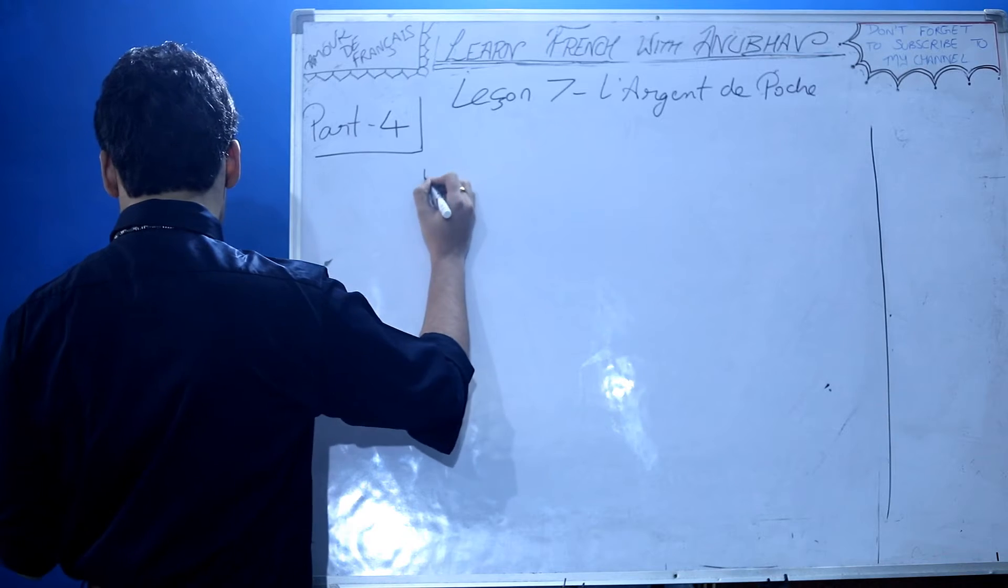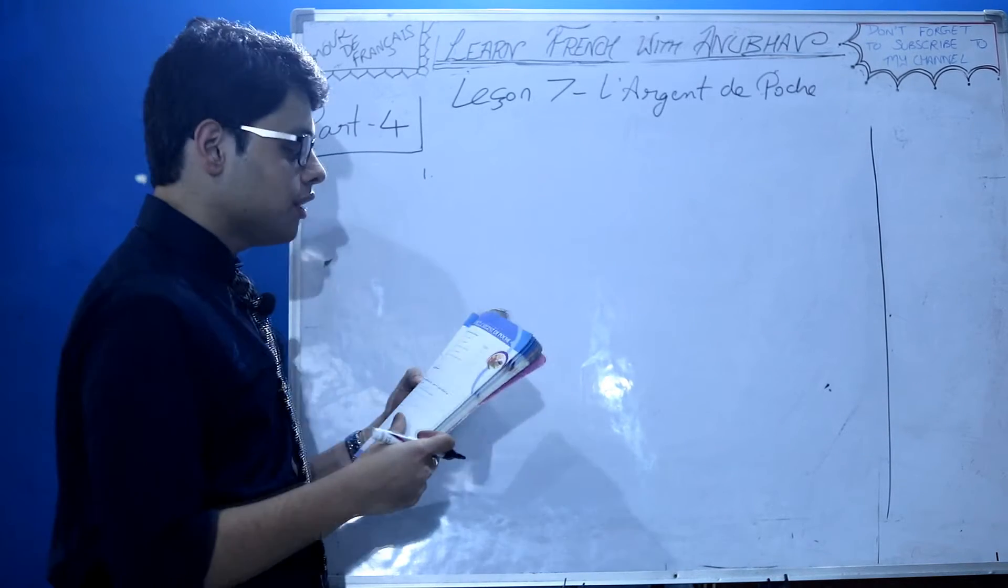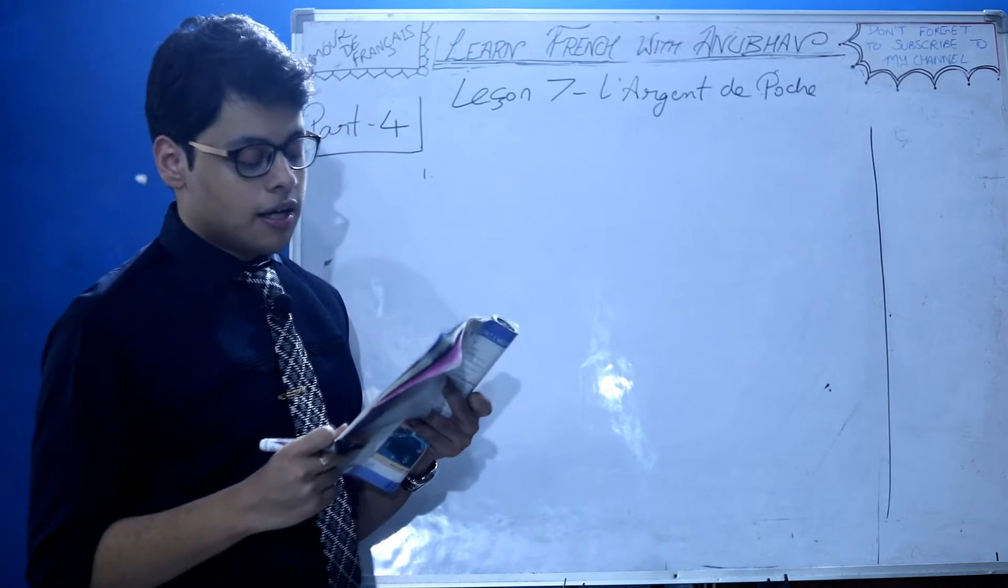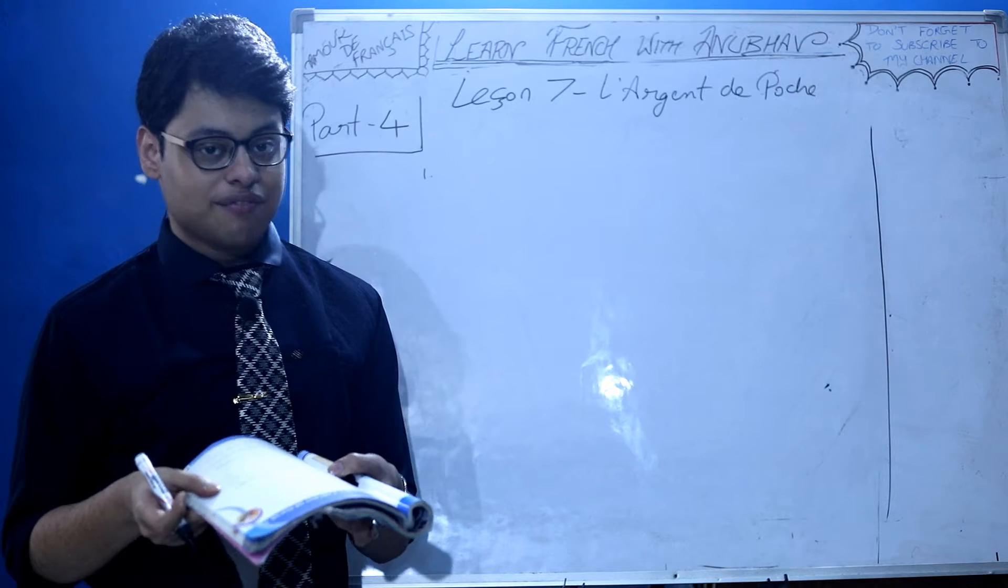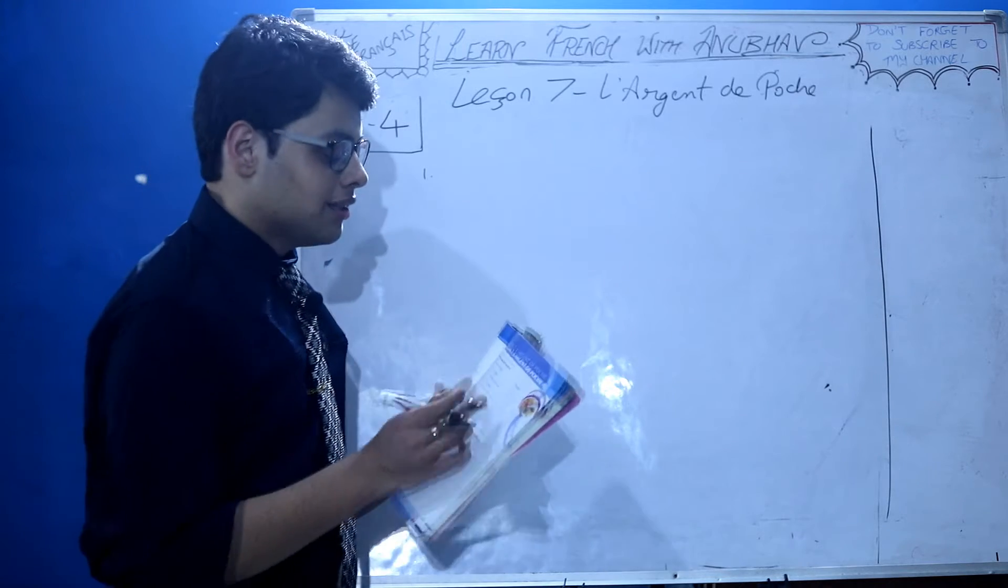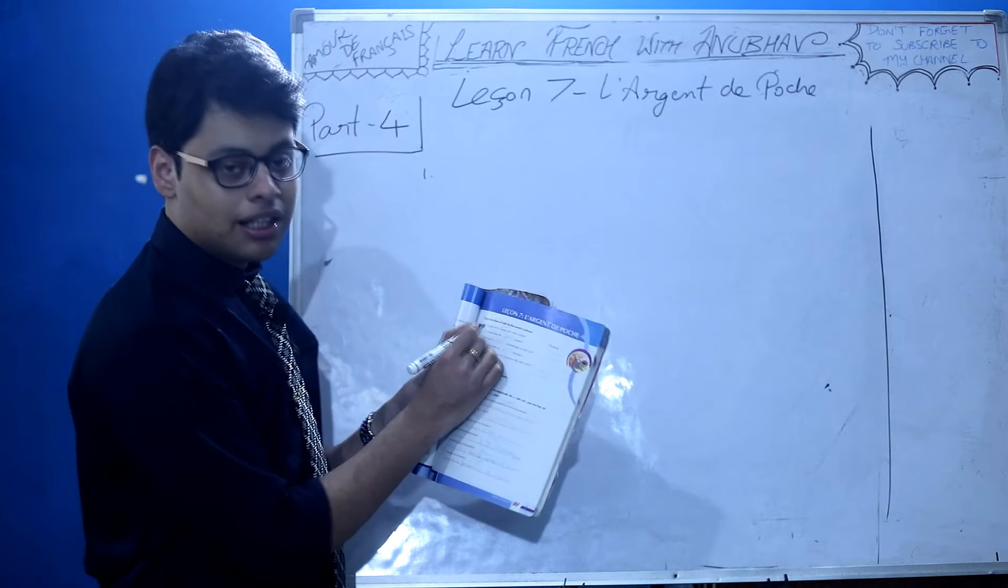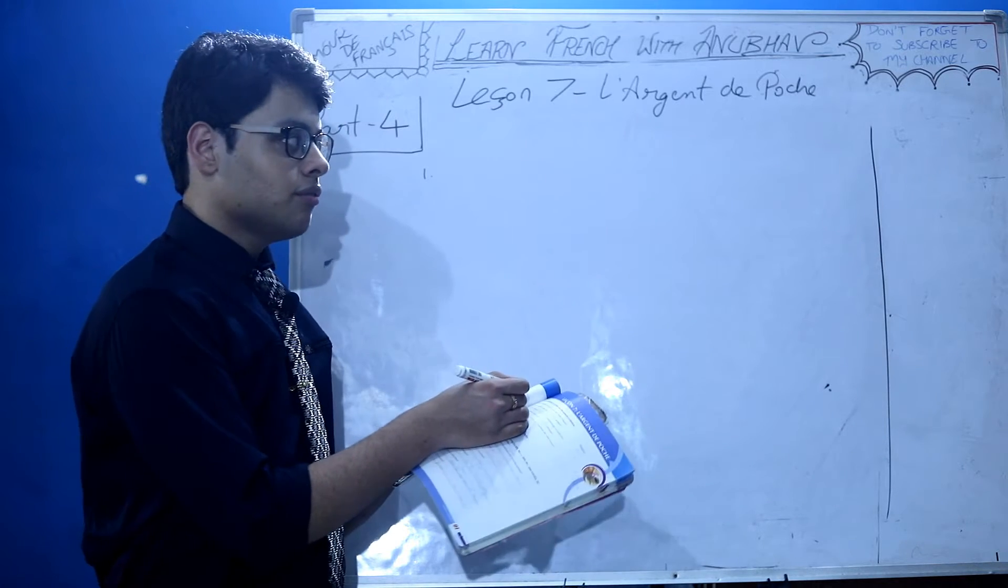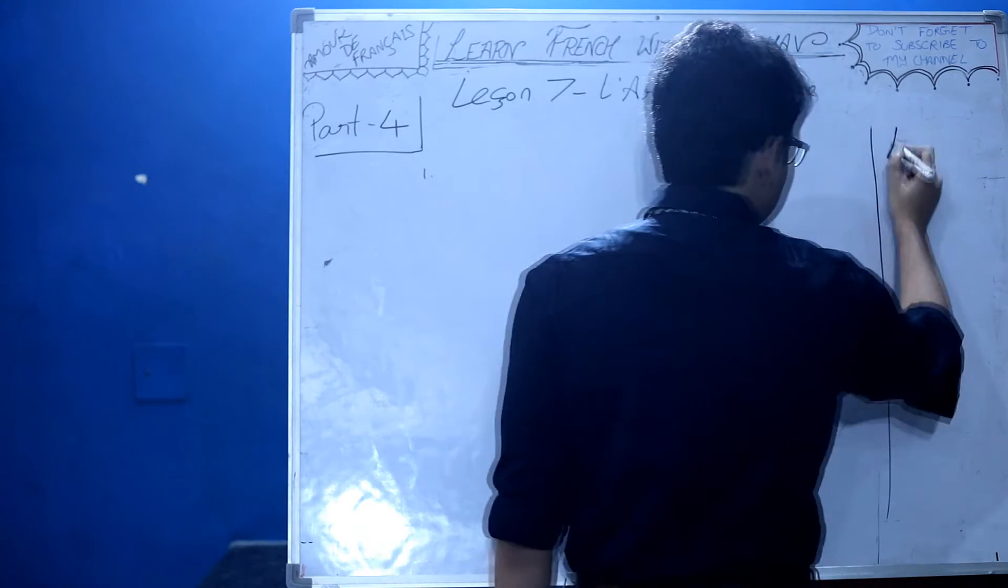Example is given: Quelle est la marque de cette voiture? Peugeot. In this blank you write the information, and here you write the interrogative adjective. There's a video on interrogative adjectives - link in description.